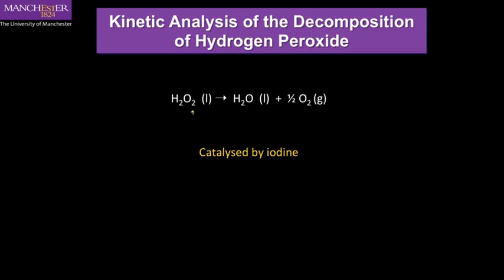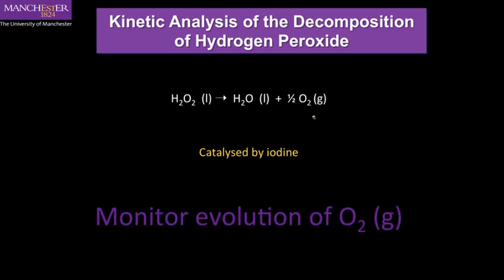Now the thing about this reaction is we've got a liquid here which is decomposing into another liquid, water, but also evolving gas as it does so. We can actually follow this reaction if we monitor the evolution of the oxygen. That's very useful because the hydrogen peroxide itself is colourless, so it's difficult to do this spectroscopically. But by analysing the amount of oxygen given out, we can have a very easy way to determine the extent of the reaction.